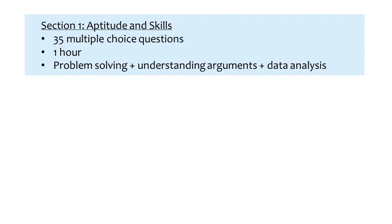Section 1, aptitude and skills, consists of 35 multiple choice questions to answer in one hour. That gives you slightly over a minute and a half per question, which really isn't much time at all, so you'll have to work quickly. This section tests problem solving, understanding arguments, and data analysis as well as making inferences from data.